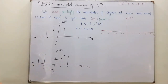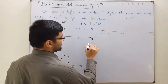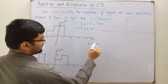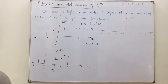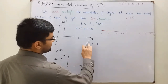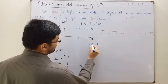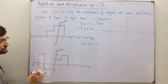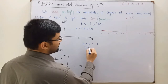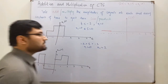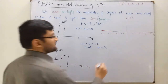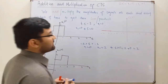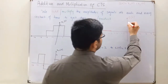From negative 3 to negative 2: when t is greater than negative 3 and less than negative 2, x1(t) is 0 and x2(t) is 2. So the sum would be 2 plus 0, which equals 2. From negative 3 to negative 2, the function value is 2.